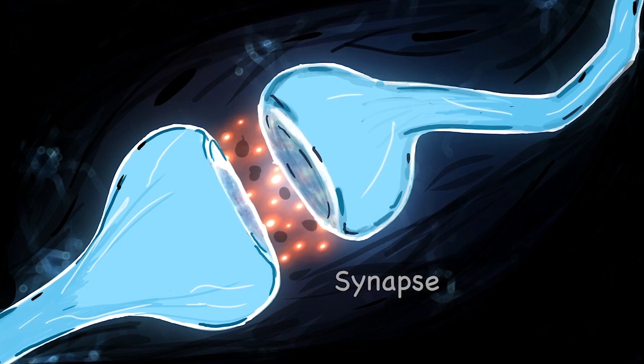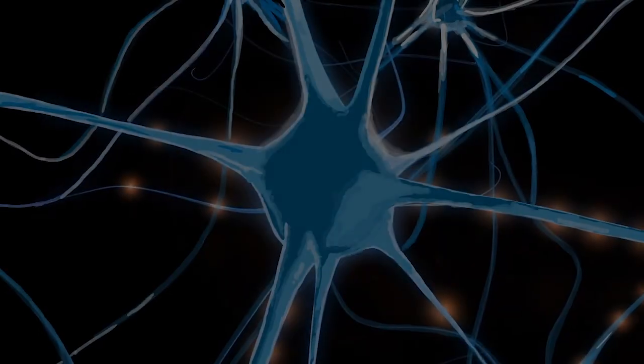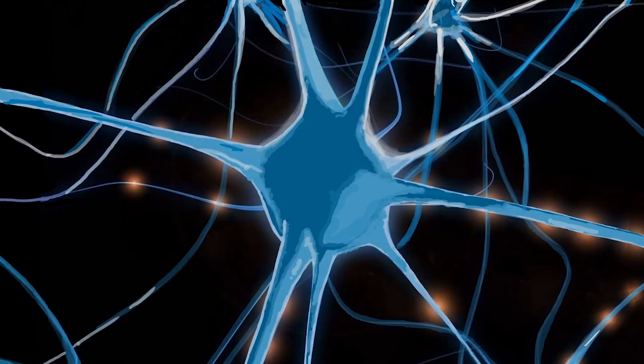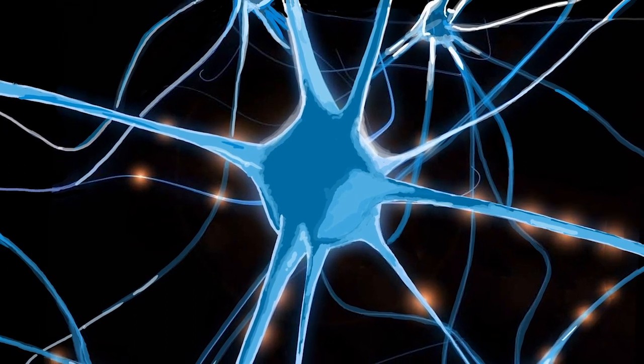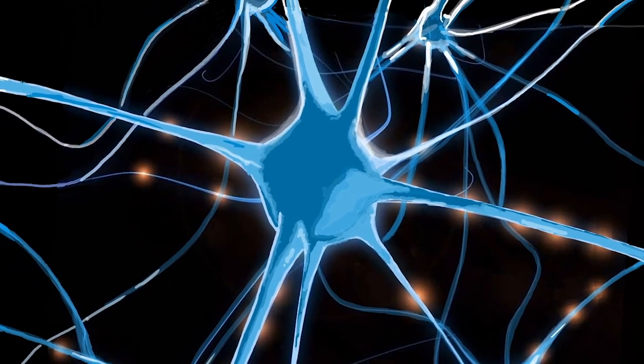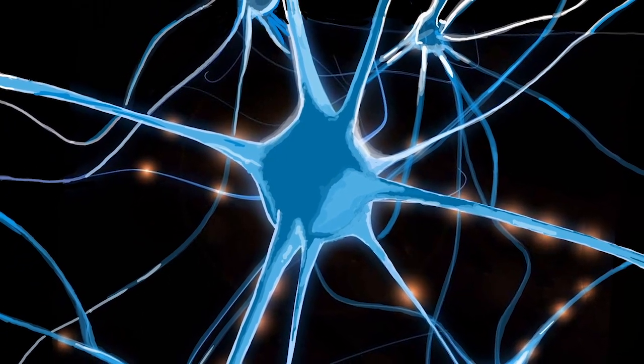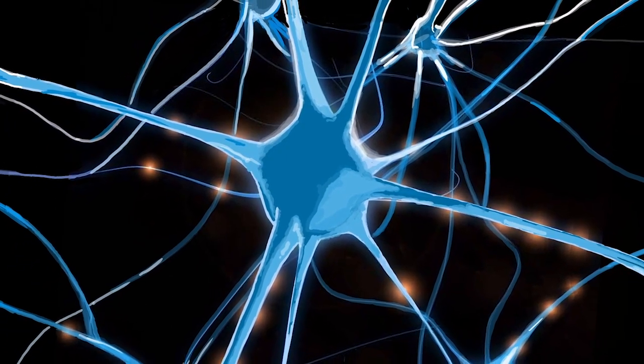The most important attribute of synapses in the hippocampus is to be plastic, meaning its ability to change its synaptic strength. When they change the way they talk to each other, when they listen to each other more, they become stronger — and we call that potentiation.